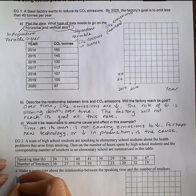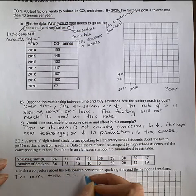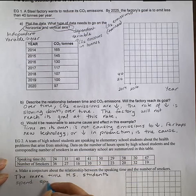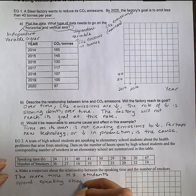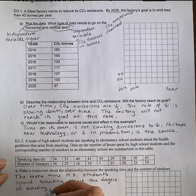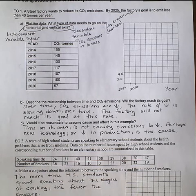So, the more time high school students spend speaking about the dangers of smoking, we would expect probably the fewer the smokers. Now, it is possible that you did not think this would have an effect. So perhaps your conjecture would be that the number of hours that high school students are spending speaking about the health effects of smoking will not have an effect on the number of smokers. This is fine. So, in statistics, we often prove or disprove our conjectures.